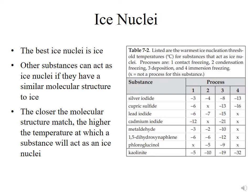Kaolinite is a common mineral, geologic in origin, and it has a wide range of temperatures at which it can act as an ice nuclei depending upon the process. If we look at contact freezing, it can act as an ice nuclei at minus 5 degrees Celsius. Of the geological materials commonly found in the atmosphere, kaolinite has been shown to be the best ice nuclei.